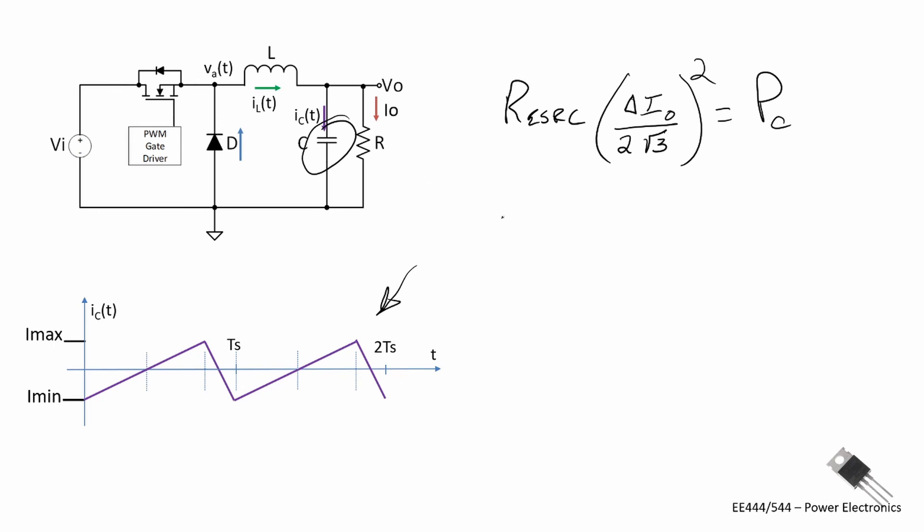For buck converters, depending on the size of the converter and the application, you may see what are called multi-layered ceramic chip capacitors. They have extremely low ESR. You'll also see electrolytics or polymer type of capacitors as well. And I will put a link in the description of this video of how to select that capacitor for different types of converters.